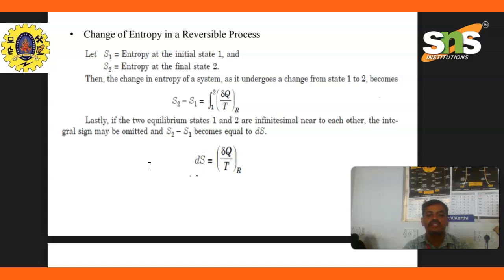For two equilibrium states 1 and 2 infinitesimally near to each other, the integral sign may be omitted and S2 minus S1 becomes equal to dS.